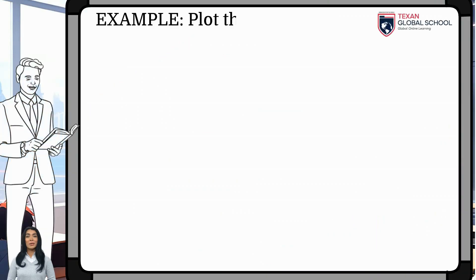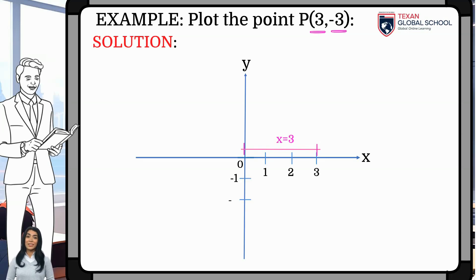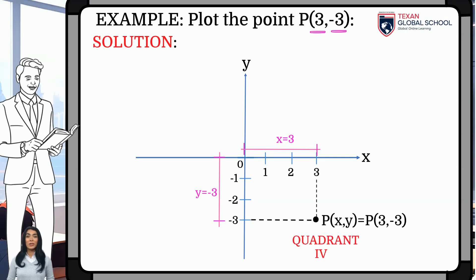In this other example, we will graph the point P with coordinates (3, -3). We first draw the coordinate axes. The abscissa is 3 units. Since the ordinate is negative, it is located 3 units below the origin. With these two distances, we can plot the point on the plane. We can see that the point is located in quadrant 4, since the abscissa is positive and the ordinate is negative.